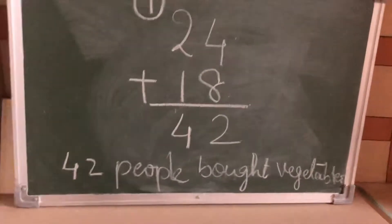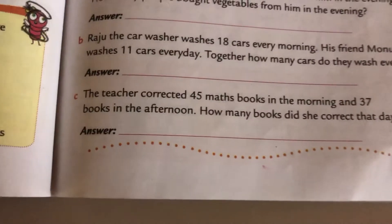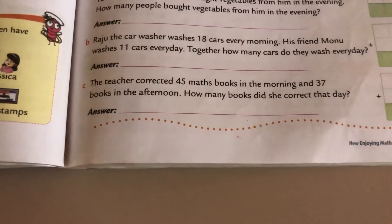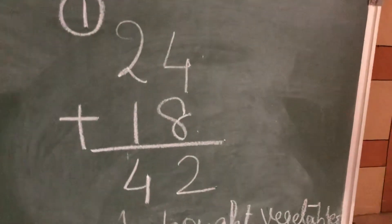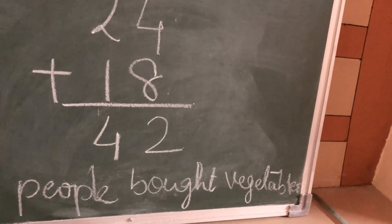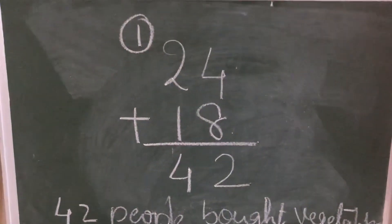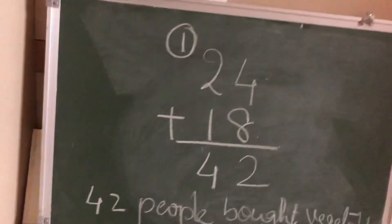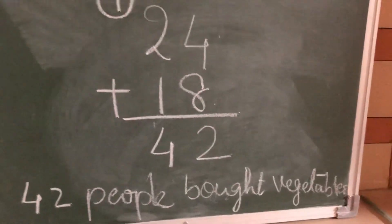42 people bought vegetables. Same way you have to complete page number 81, B and C. Simple sums are there. Just you have to complete them. So children, here we finish. Complete these sums and do the exercise so that you also get used to it and it is a practice for you. Thank you, children.